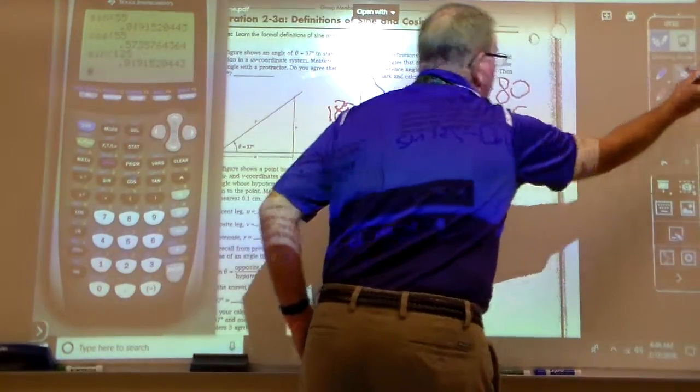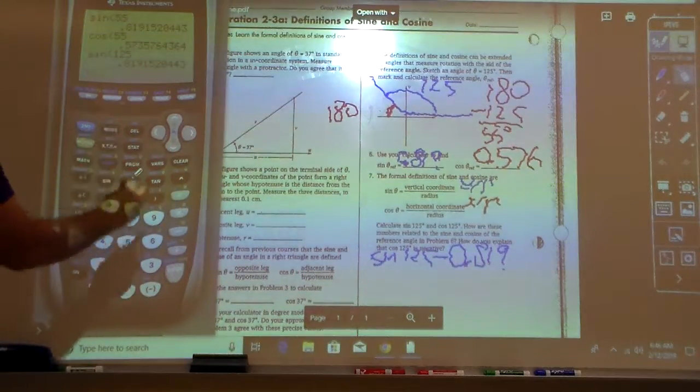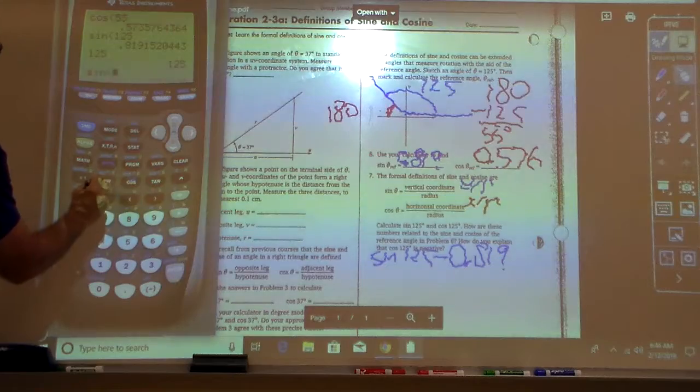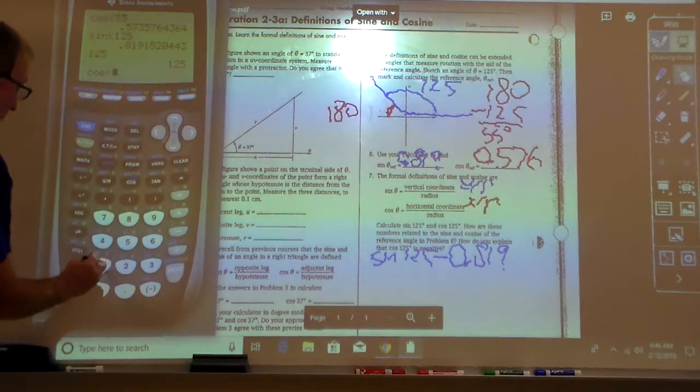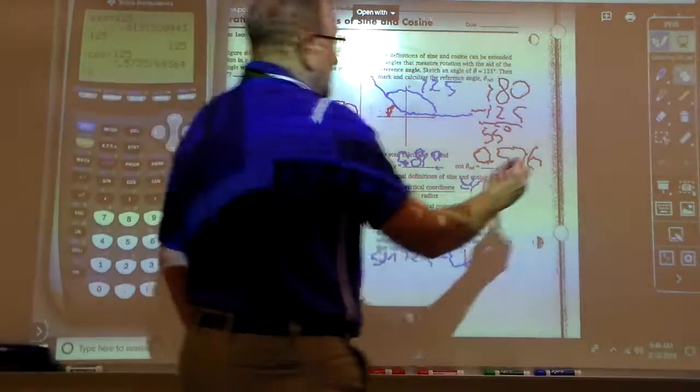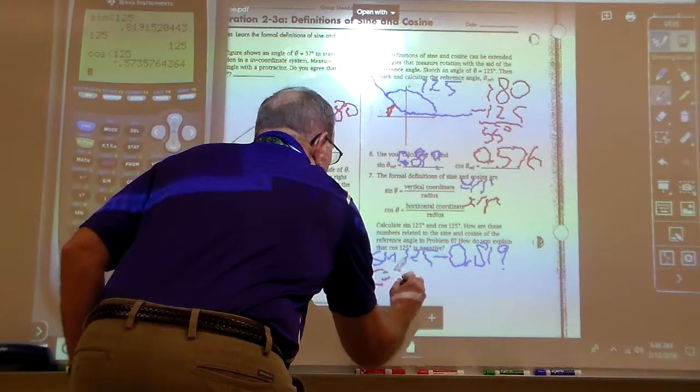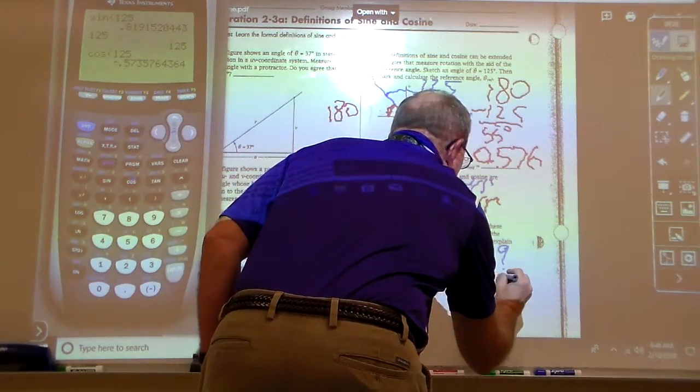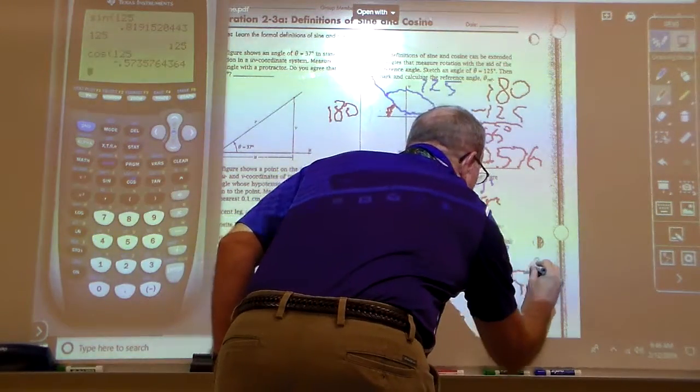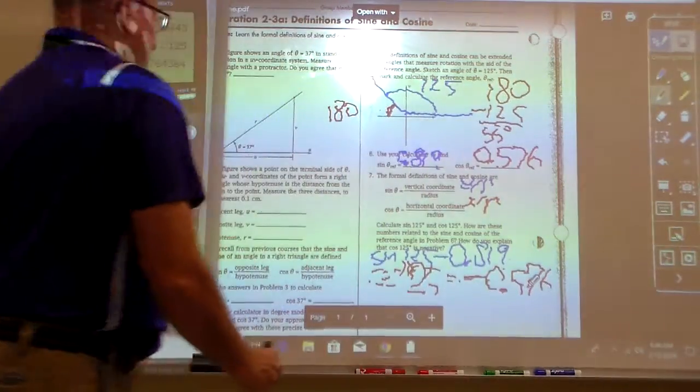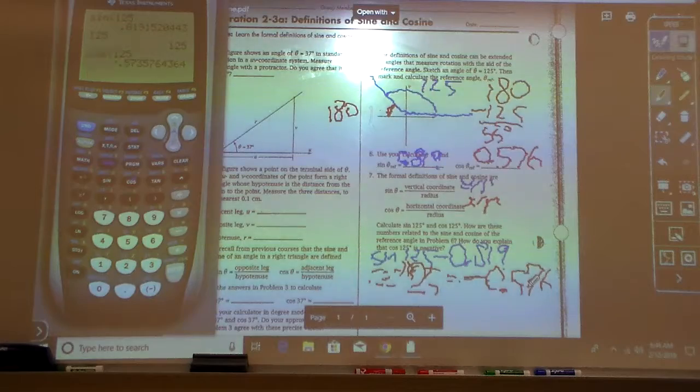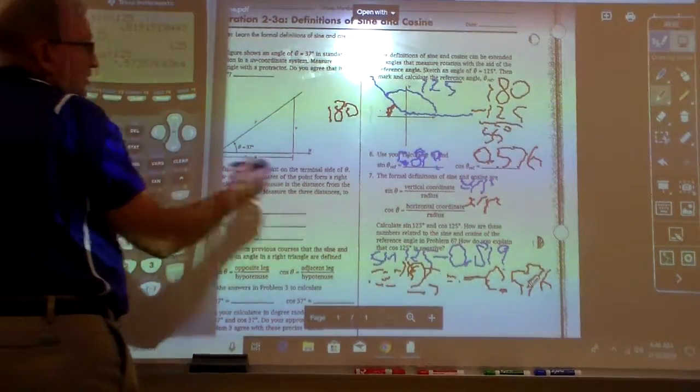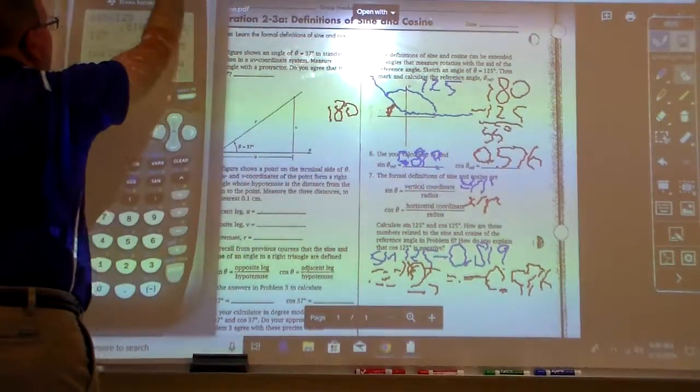And let's do cosine of 125, enter, and notice this time I get, for the cosine of 125, I get the same number, but it's negative 0.576 when rounding. So we get the idea. Why did that happen? Why did we get the same values, but yet they were different numbers? Well, that's kind of what this here, that's what this hidden lesson's really all about.